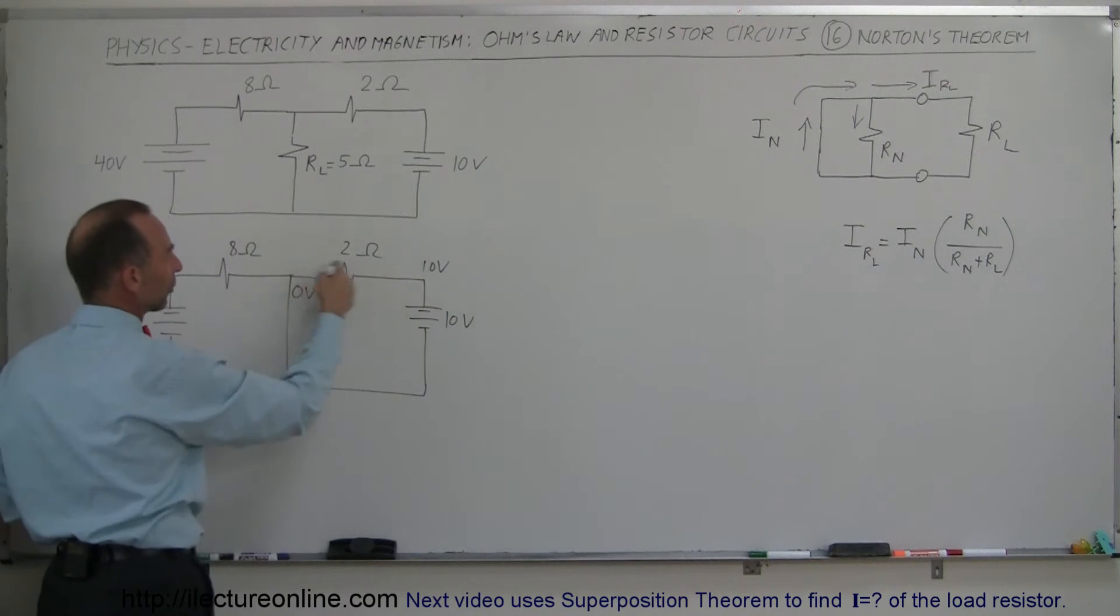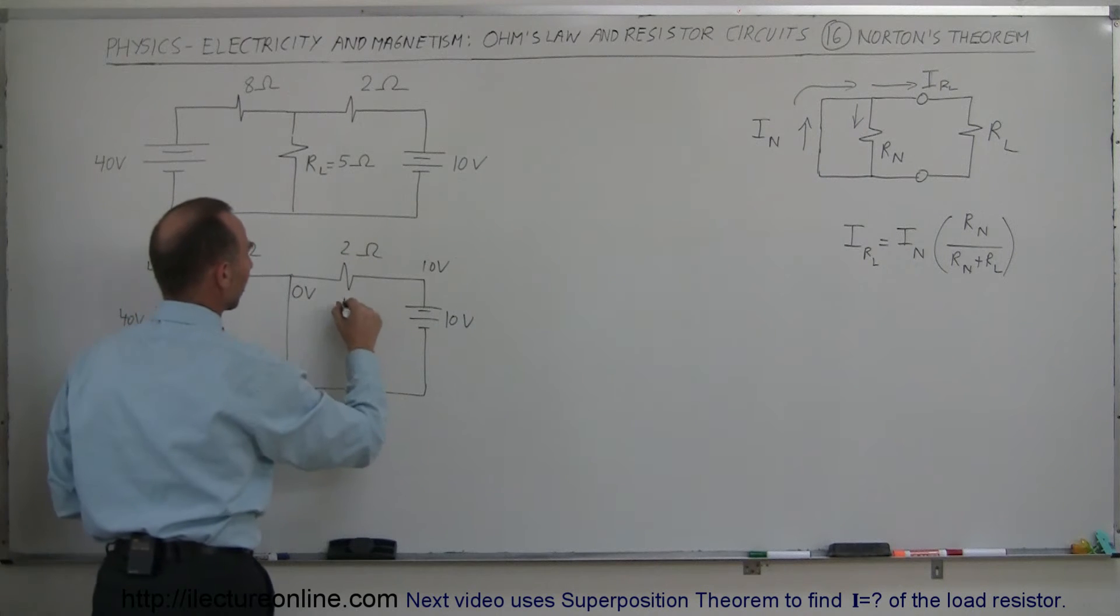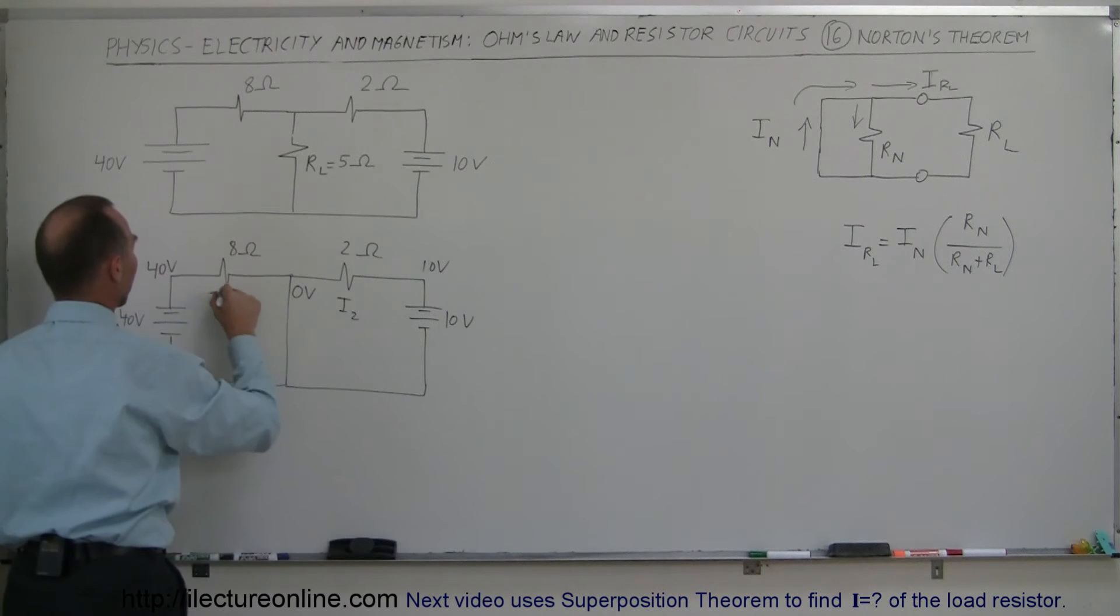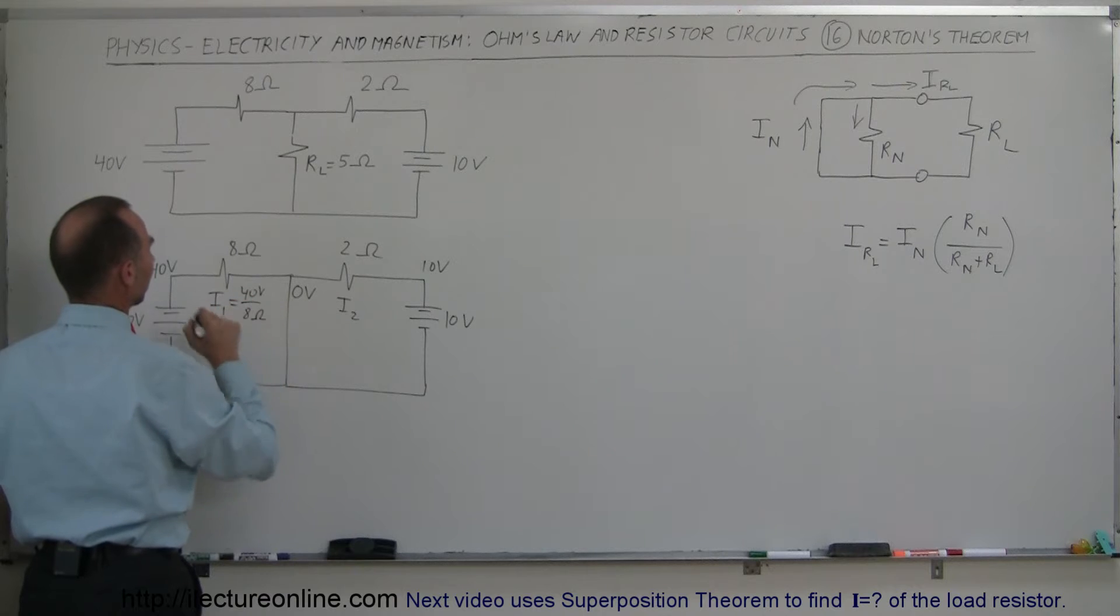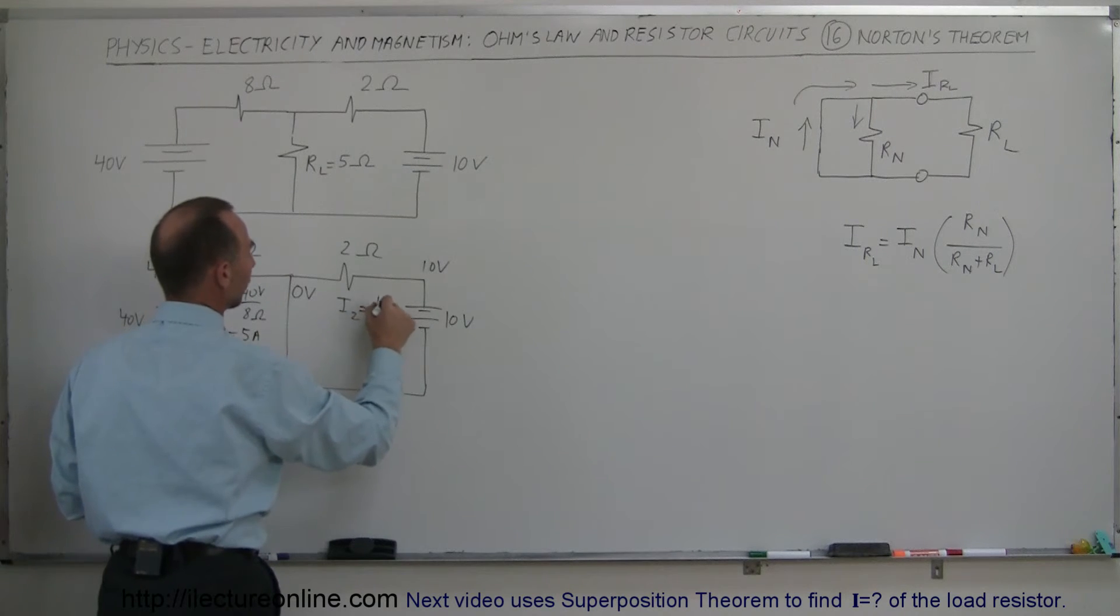And we can now see that the current through this branch, so let's call this I2, let's call this I1. So I1 would be equal to the voltage, which is 40 volts, divided by the resistance, which is 8 ohms, and then 40 divided by 8 is 5 amps. And over here, this would be 10 volts divided by 2 ohms, which is equal to 5 amps.